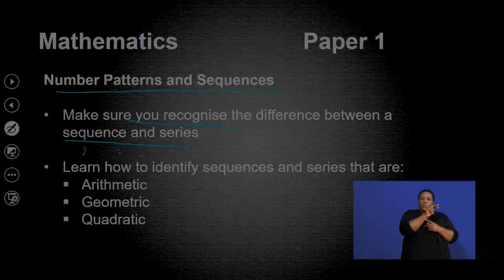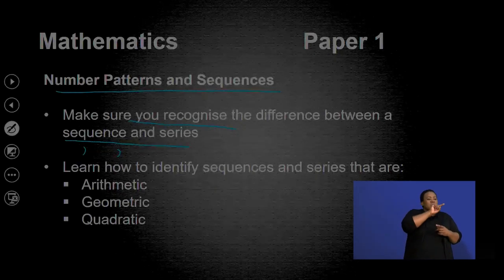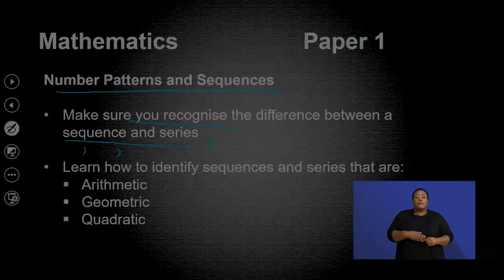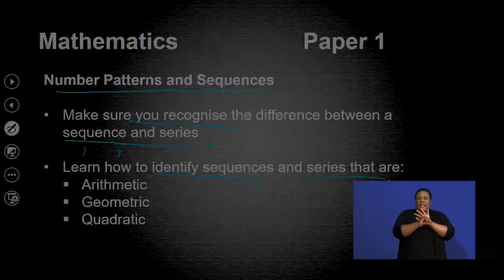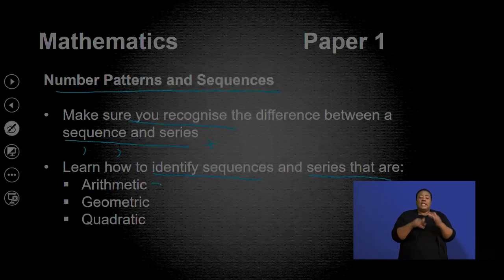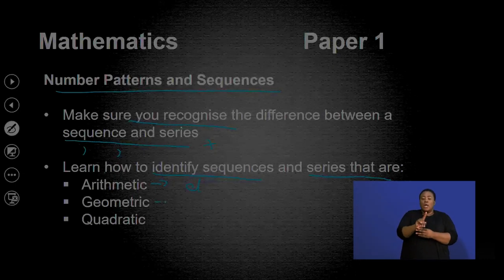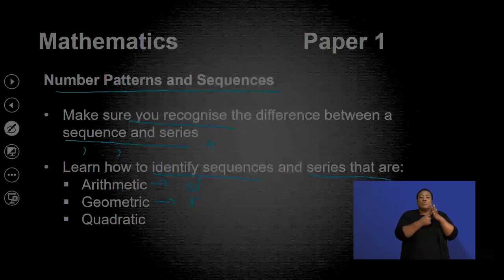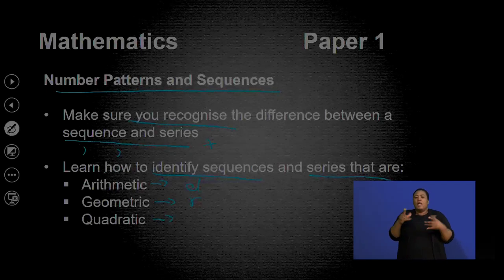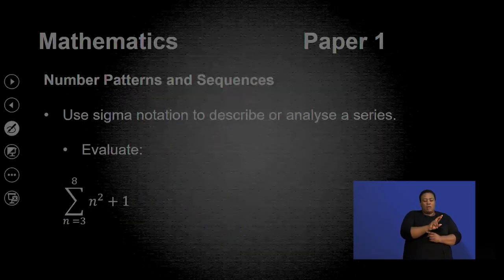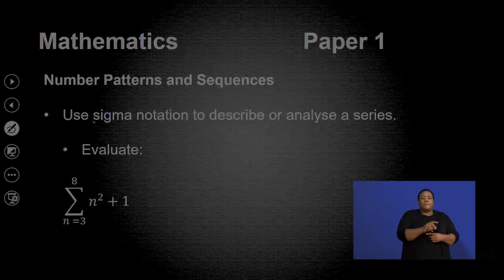A few notes: you need to recognize the difference between a sequence and a series. A sequence uses semicolons because it's one term after the other. With a series, we are adding the terms together. You also need to identify the type of sequence or series: arithmetic sequences have a common difference D, geometric sequences have a common ratio R, and quadratic sequences have two differences where one forms an arithmetic sequence. Let's look at a question in sigma notation.